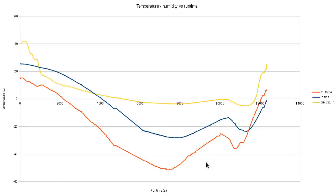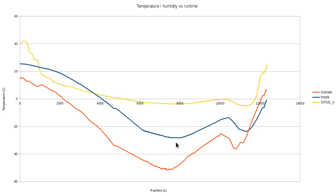These are the inside and outside temperatures, and the yellow is the humidity. You can see the enclosure was working fairly well, because there's a good 20 degrees or so difference between them. The lowest outside temperature recorded was just under minus 50, and the inside temperature was about minus 28. There's a little bit of a delay on the inside temperature changing because it has to get through that insulation.